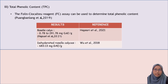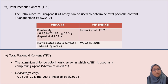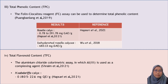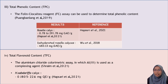The third method is total phenolic content. Based on a study from Puan Balang, the Folin-Ciocalteu reagent assay can be used to determine total phenolic content. Hubsari's study revealed that there was 0.78 to 291.78 mg GAE per g of total phenolic content in Roselle. Meanwhile, another study revealed that there was 683.13 mg GAE per g in dehydrated Roselle extract. The fourth method is total flavonoid content. Shra mentioned that aluminium chloride colorimetric assay can be used as a complexing agent to identify TFC. A study from Hafsari showed that there was 0.1805 to 22.6 mg QE per g of TFC in Roselle extract.